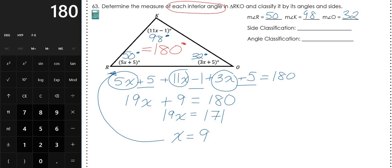Now for the side classification. I don't know the measure of each side length, but since all three angles are different measurements, all three side lengths will be different as well. I don't have to know the lengths to decide it's a scalene triangle. The other options were isosceles — two sides the same, which requires two equal angles — and equilateral, where all angles equal 60 degrees. They're not, so this is scalene.